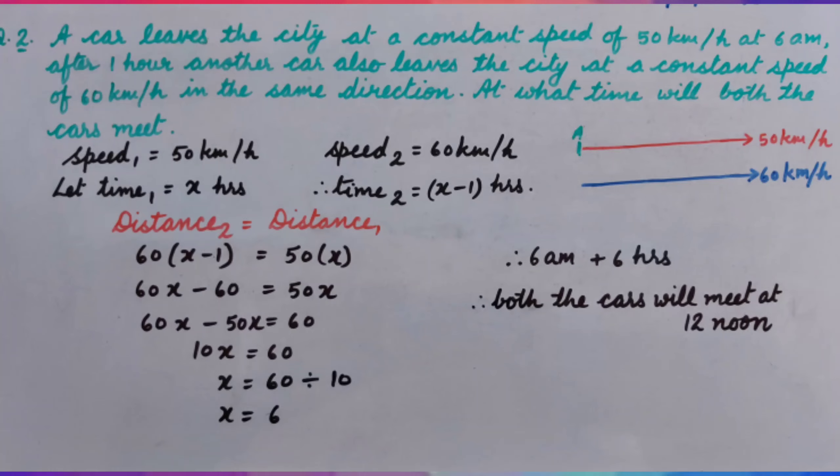From point A, one car starts at 6 a.m. and travels at the rate of 50 km per hour. And after one hour, that is at 7 a.m., the second car starts and it travels at the speed of 60 km per hour.